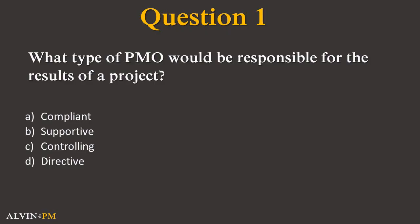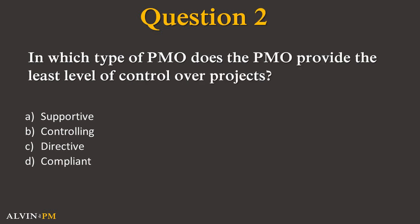Question 1. What type of PMO would be responsible for the results of a project? Is it A. Compliant, B. Supportive, C. Controlling, or D. Directive? If you chose D, then you're correct. Because a directive PMO has the highest level of control over a project, it would be the one most responsible for the success and results of a project.